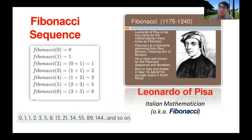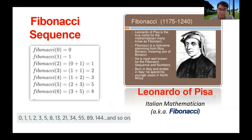Fibonacci 0 is 0, Fibonacci 1 is 1. Thus Fib 2 is 0 plus 1, which equals 1. Fib 3 is 1 plus 1, which equals 2. And so these are the Fibonacci numbers.